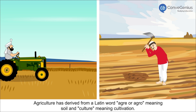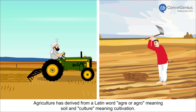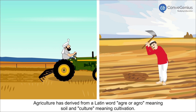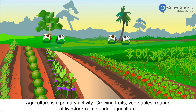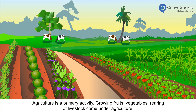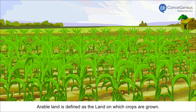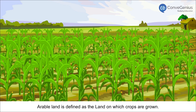Agriculture is derived from the Latin words 'ager' or 'agro' meaning soil, and 'culture' meaning cultivation. Agriculture is a primary activity. Growing fruits, vegetables, and rearing of livestock come under agriculture. Arable land is defined as the land on which crops are grown.